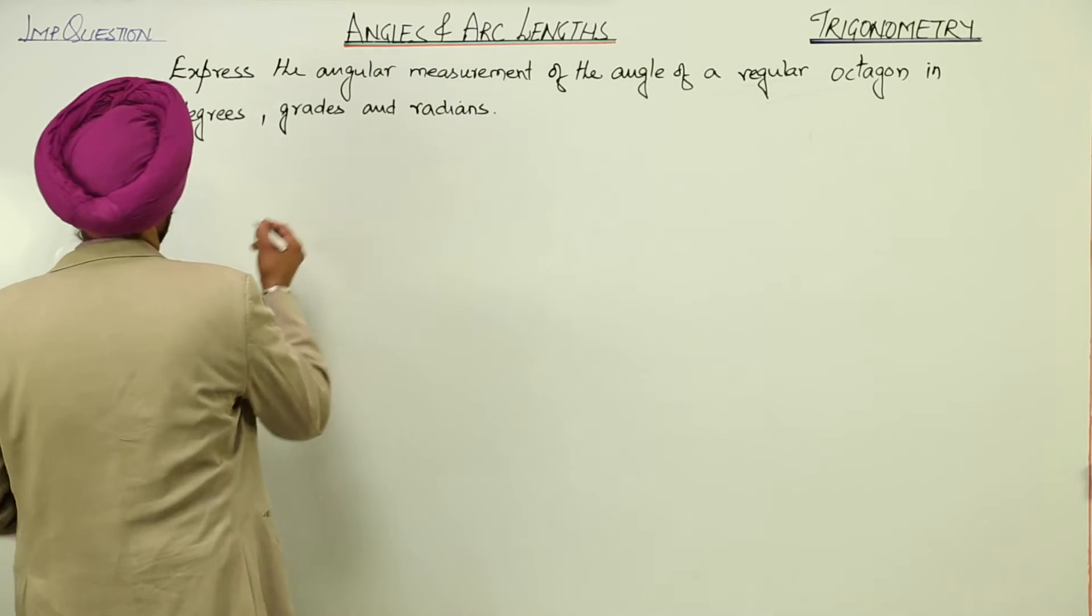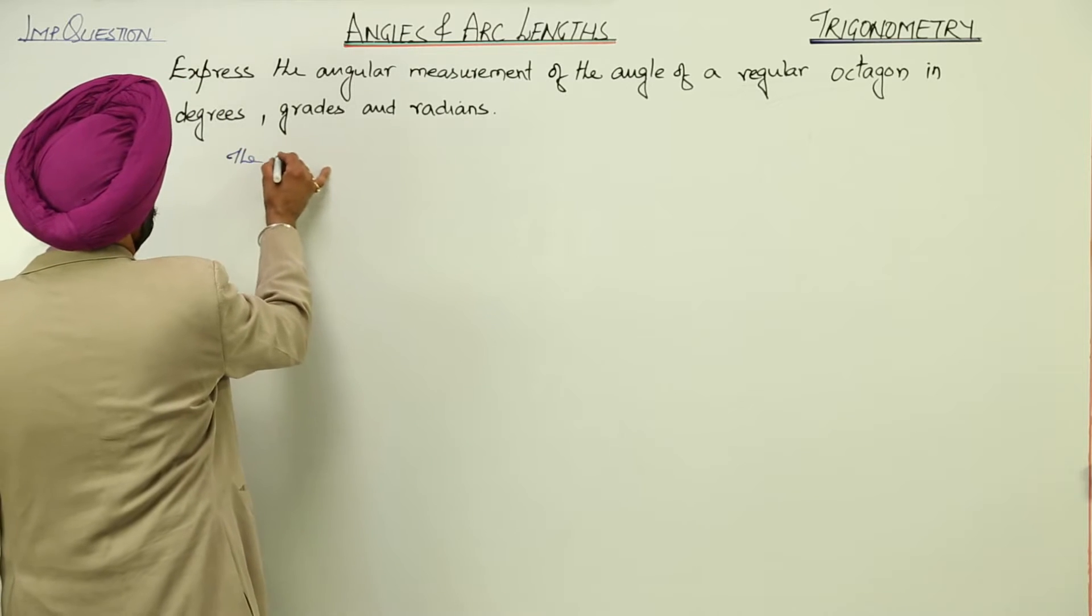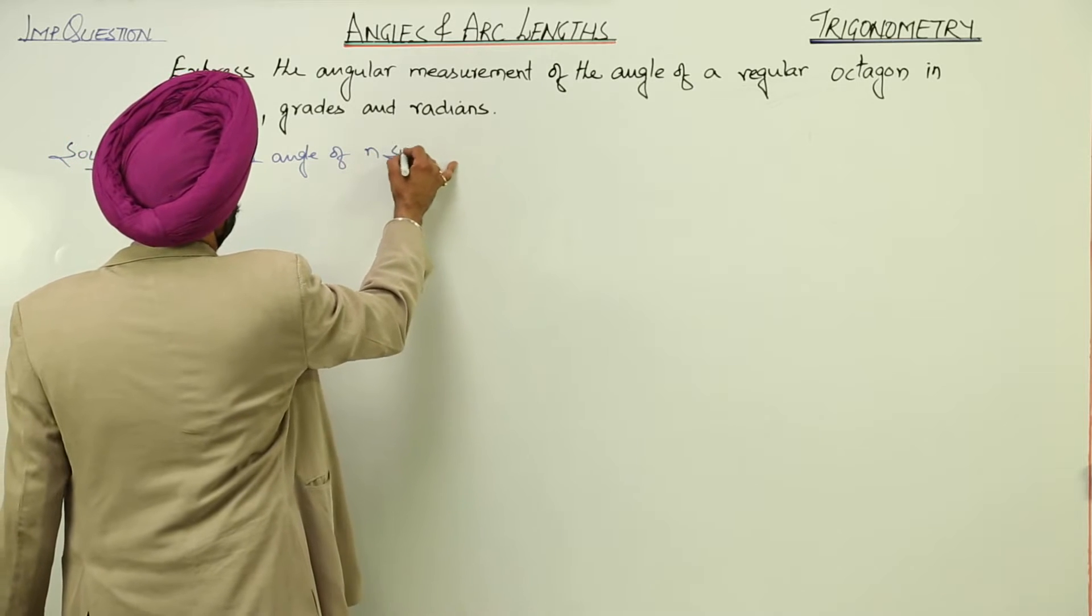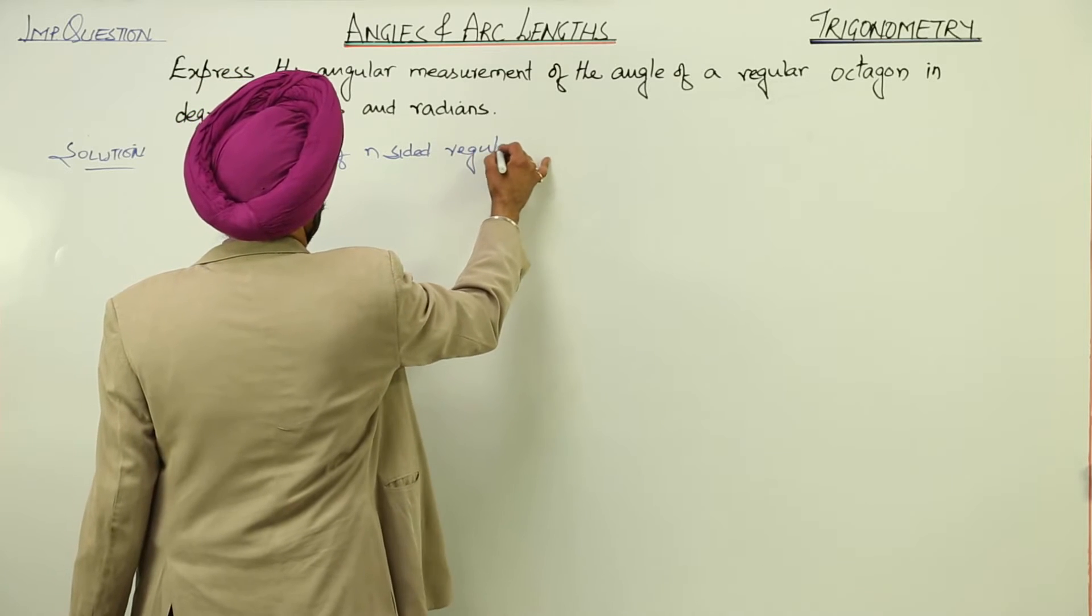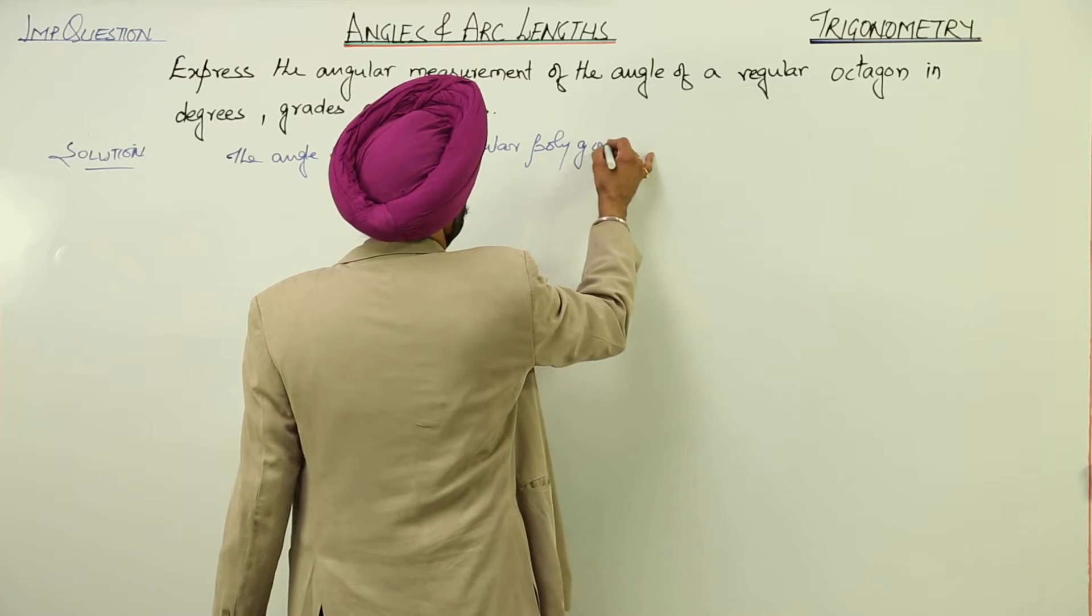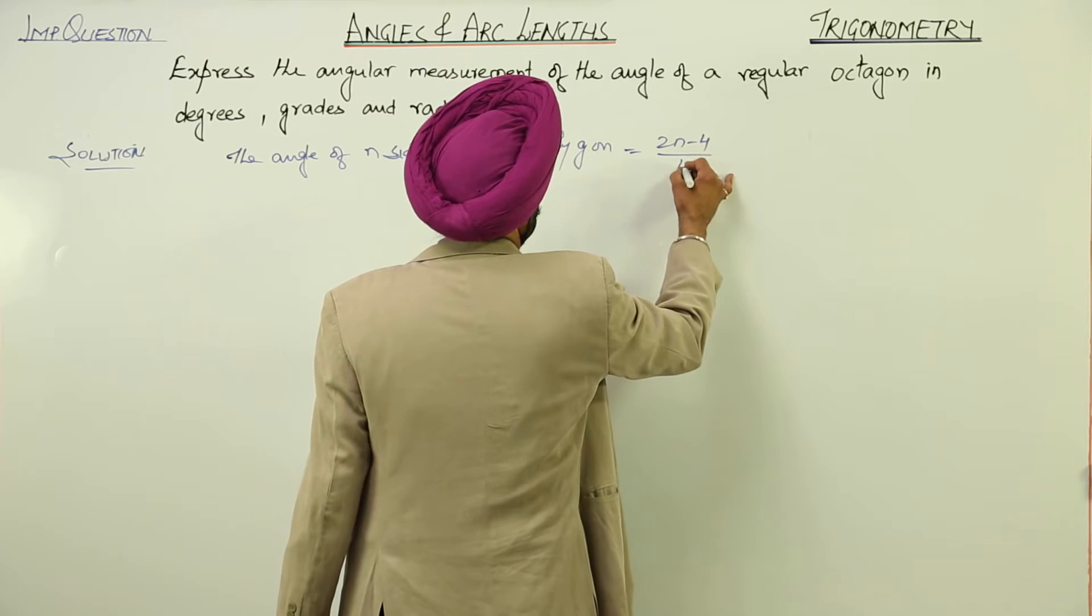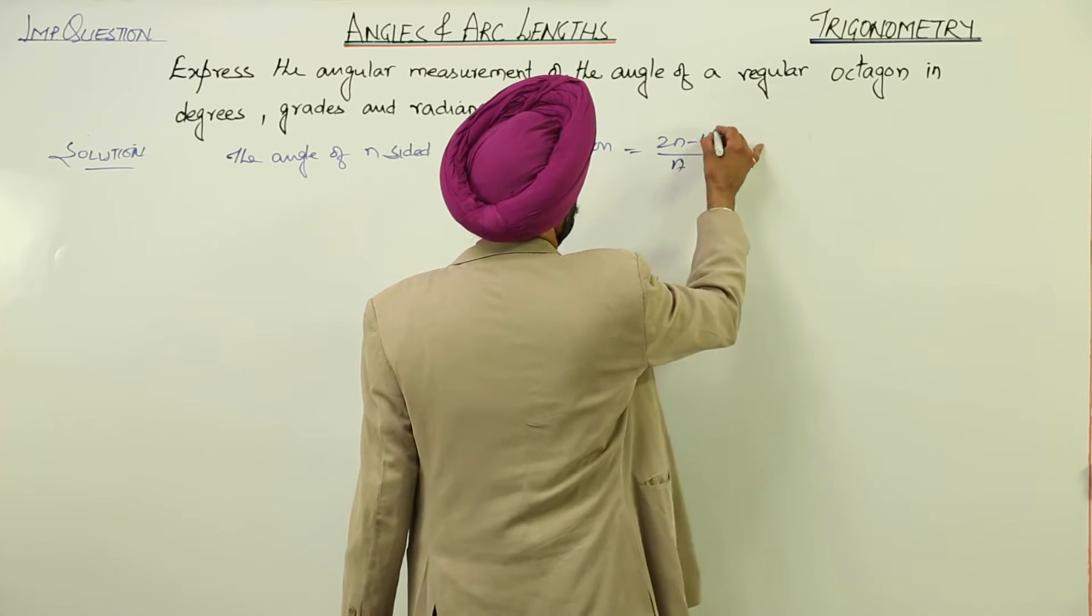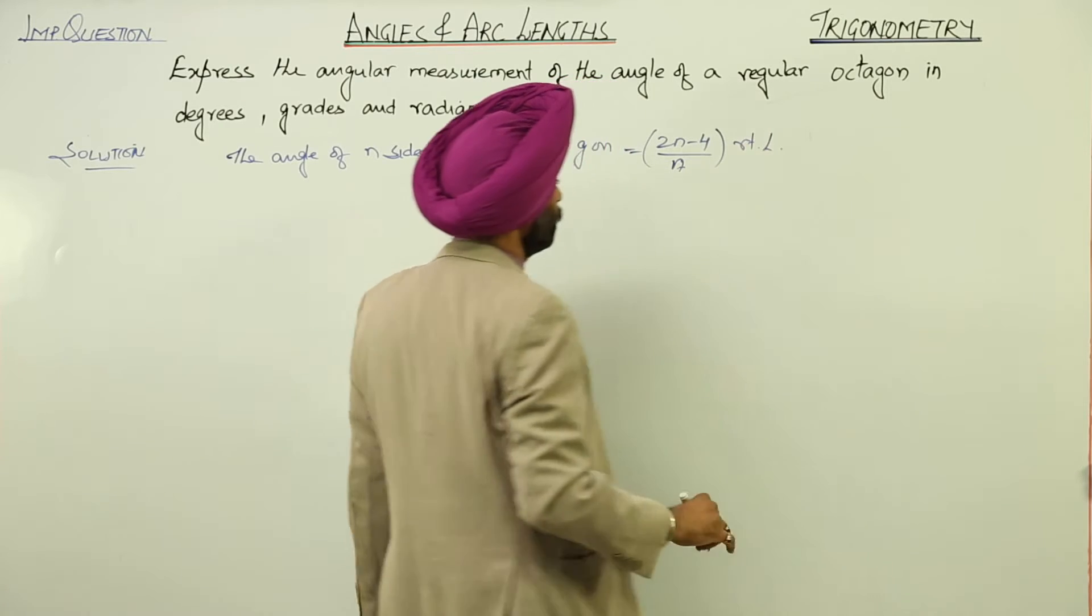The angle of an n-sided regular polygon is equal to 2n minus 4 upon n right angles.